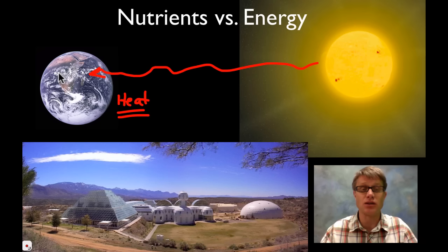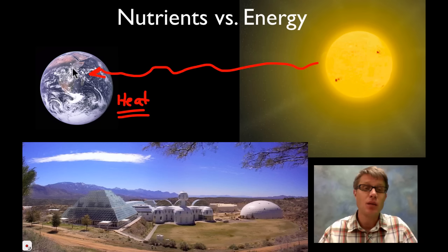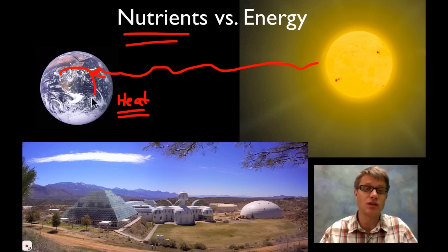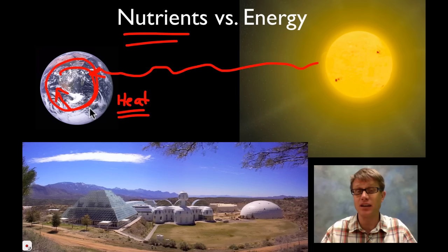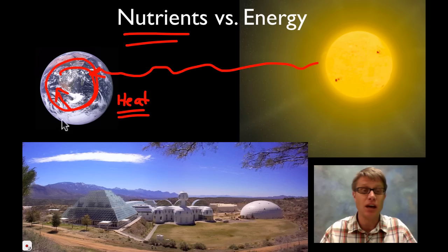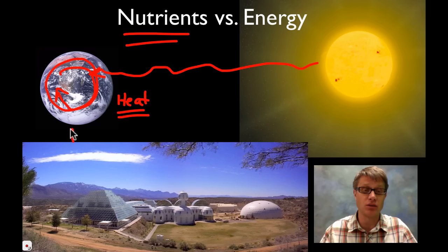It's going to move in one direction and then it eventually ends up as heat. But the nutrients on our planet are different — the nutrients on our planet are going to be recycled. In other words the amount of water that we have on our planet is static, the amount of carbon that we have is static, and it has to be recycled over and over again on the biosphere, which is the earth.